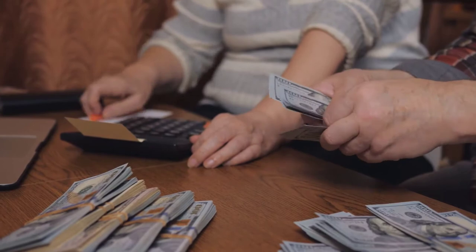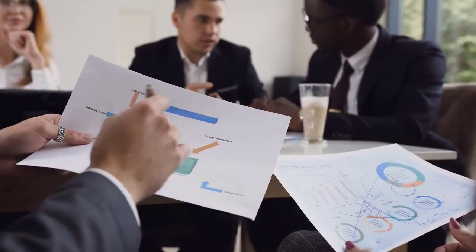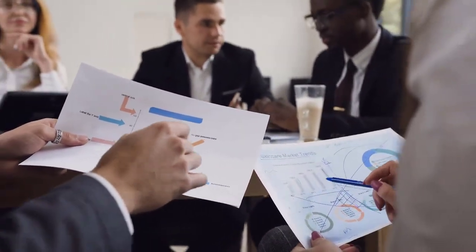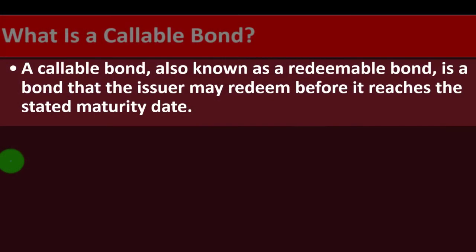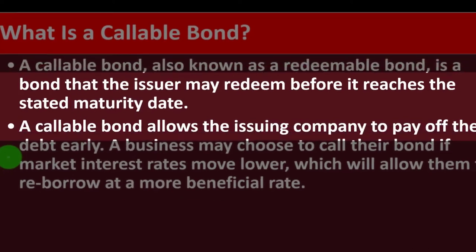Now we're getting a bit more complex on bonds, looking at callable bonds — typically associated with corporate bonds. A callable bond, also known as a redeemable bond, is a bond that the issuer may redeem before it reaches the stated maturity date, which is the end term where you'd usually receive the face amount.